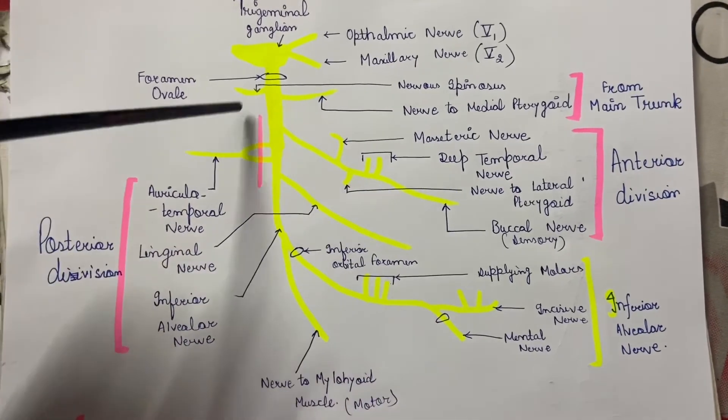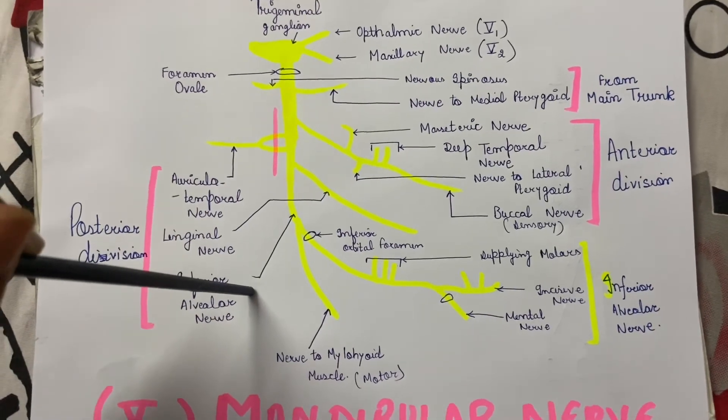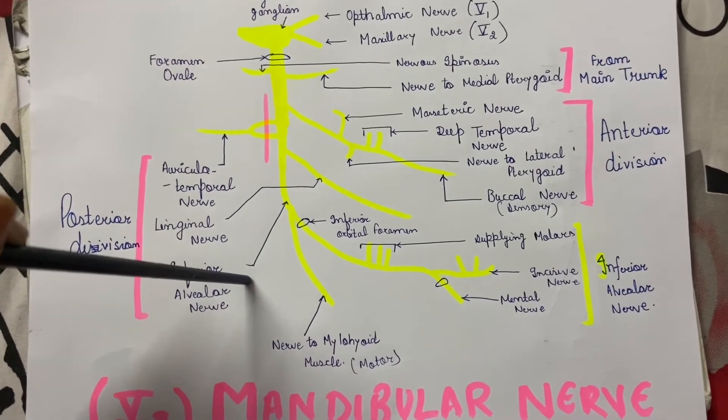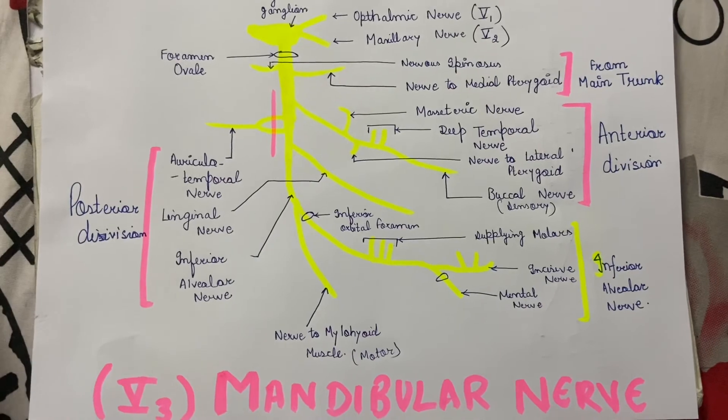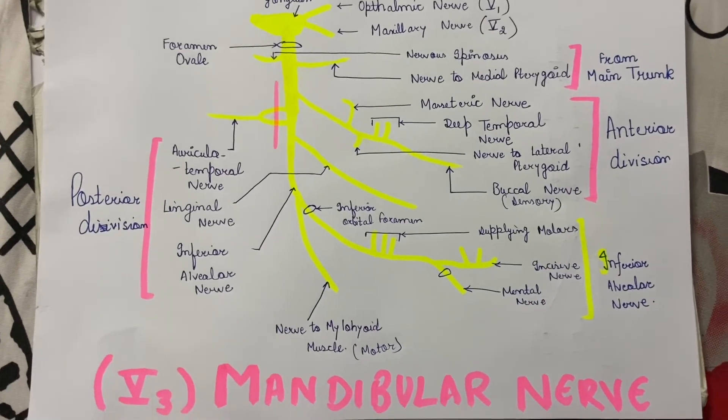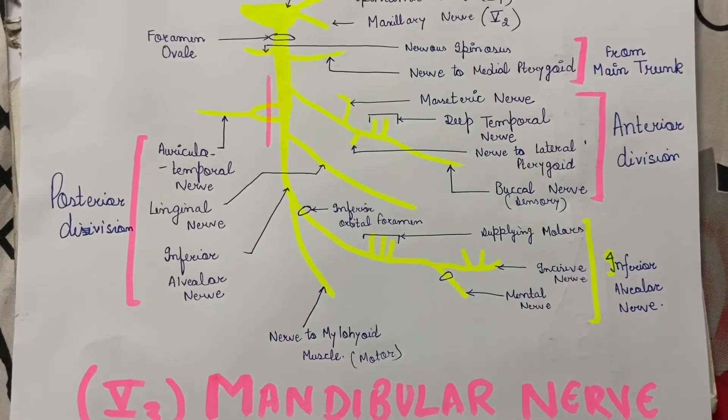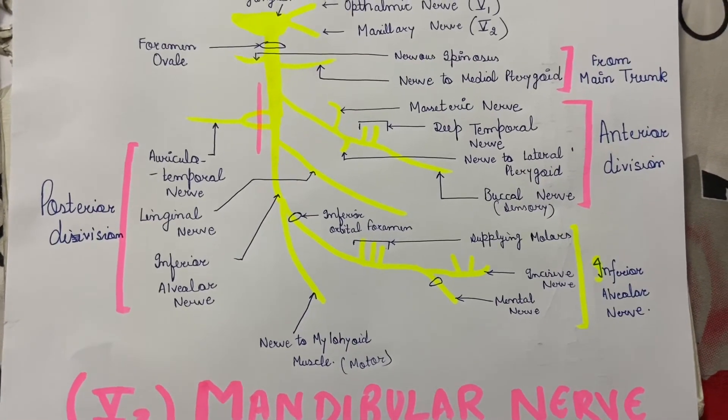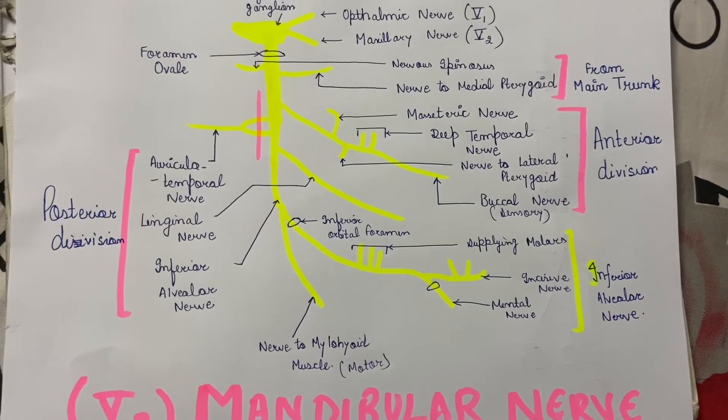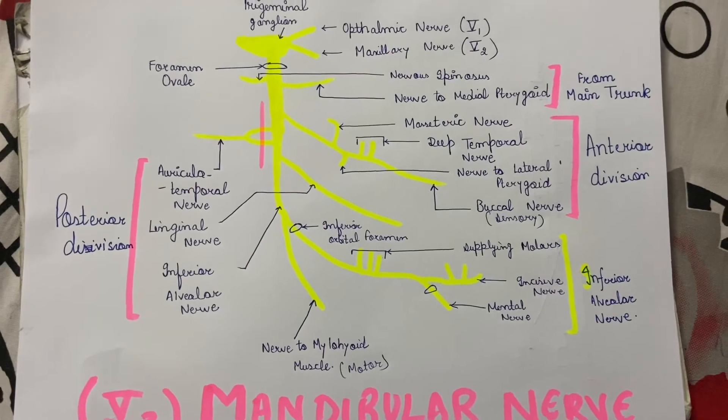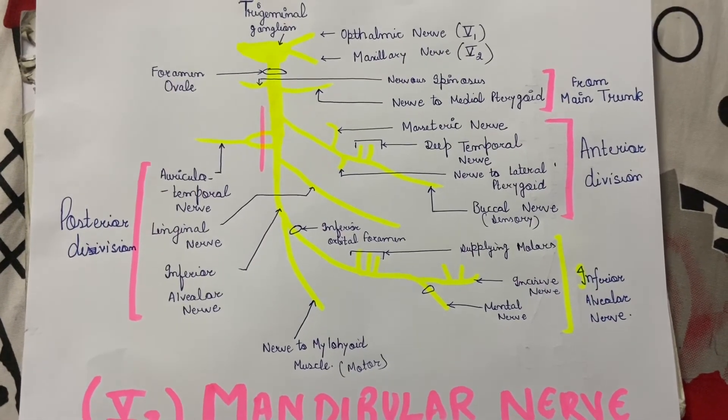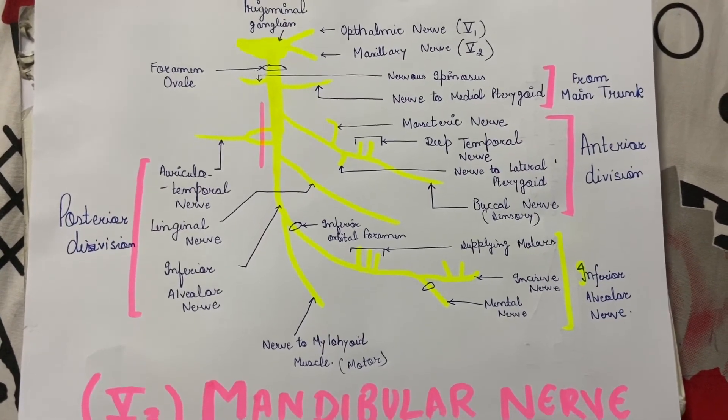So this is the whole mandibular nerve. Mandibular nerve is also known as the nerve of the cat of nine tails. You should remember its branches and divisions. This is very important from the exam point of view.